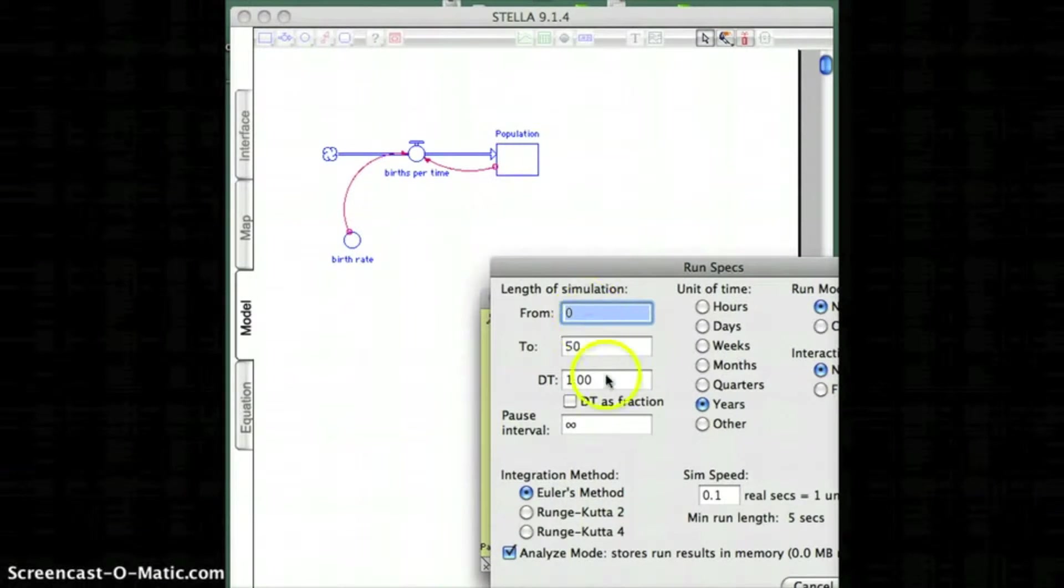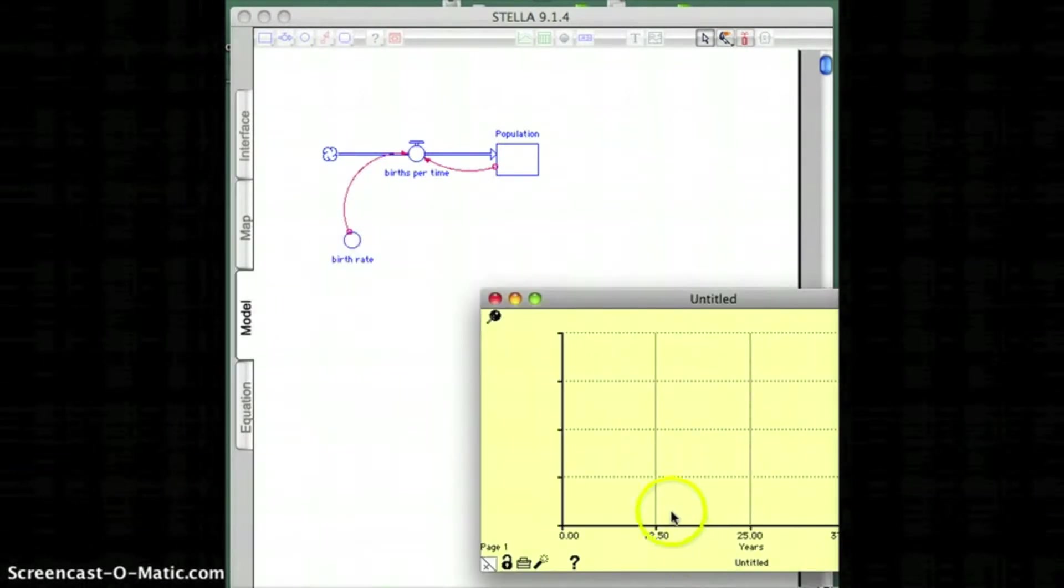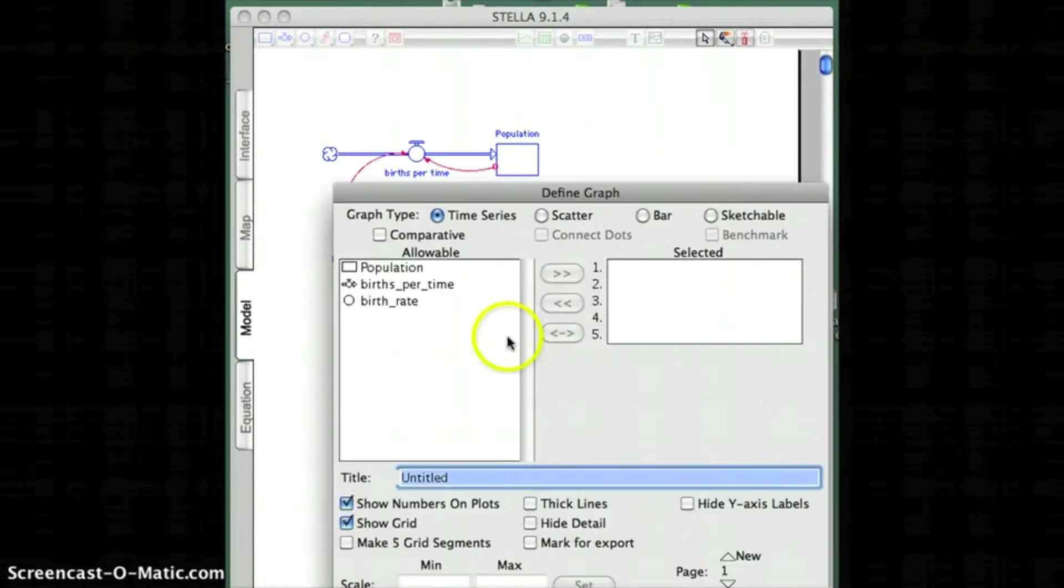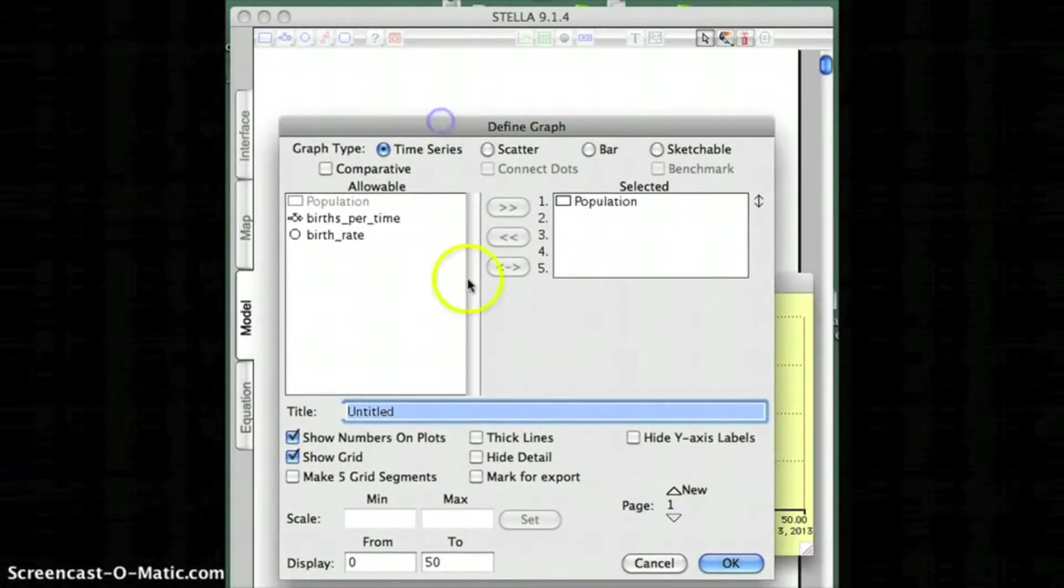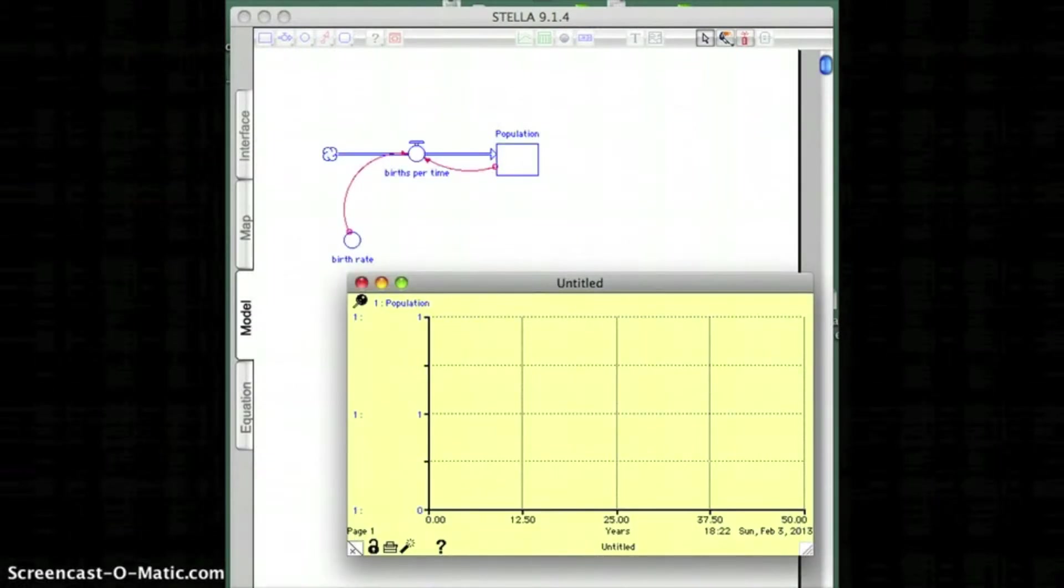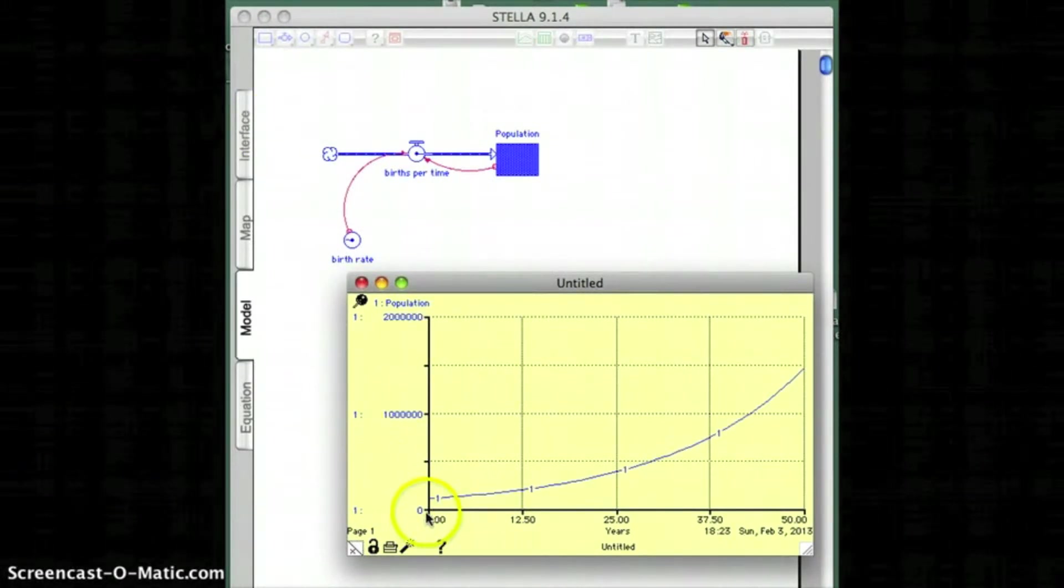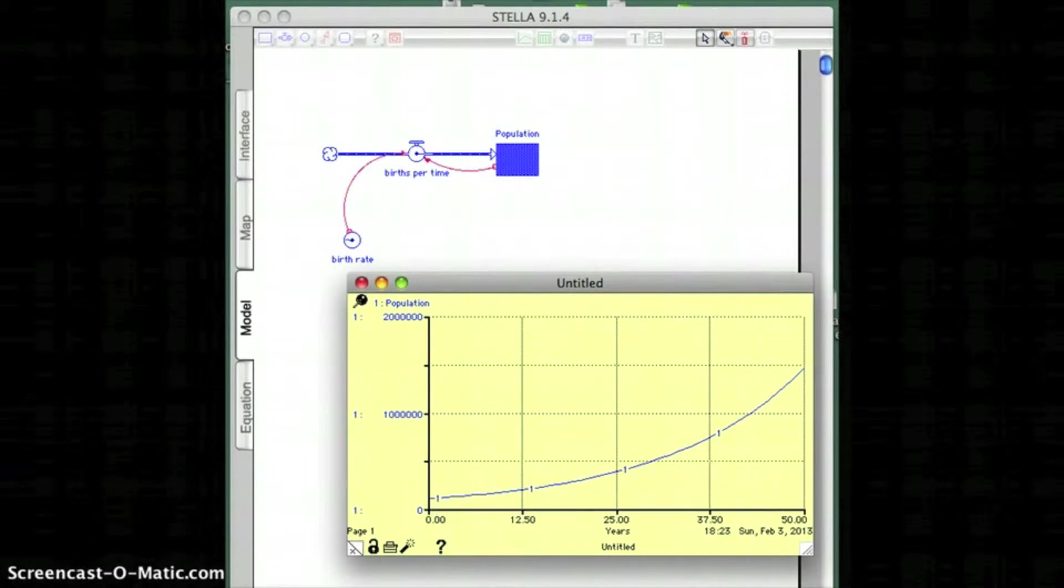And for the graph, we're going to set the specifications. It's going to go from 0 to 50 years, calculated one time a year. Next, set up the y-axis for this graph. And then run the graph, and there's the graph.